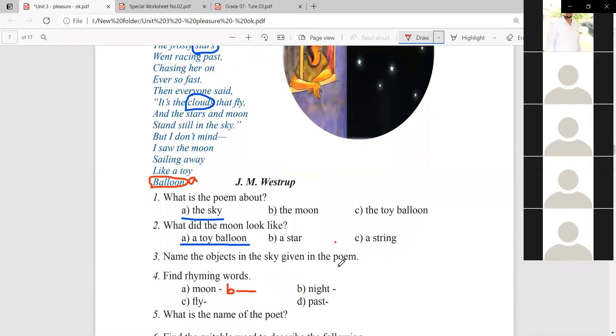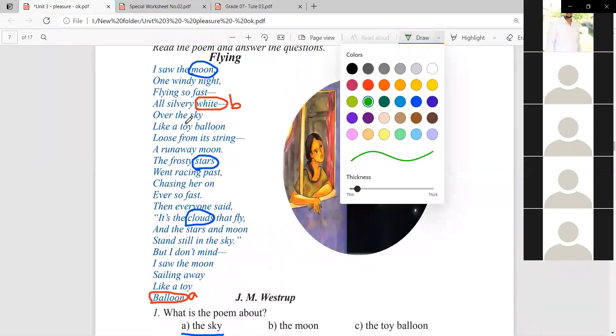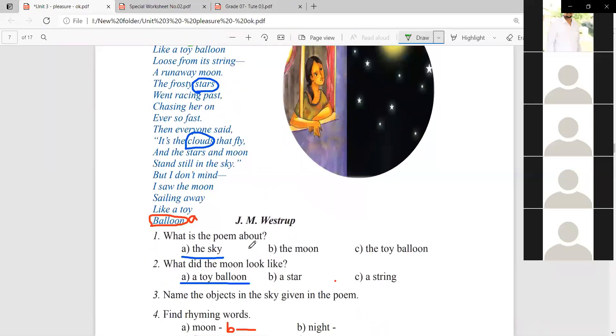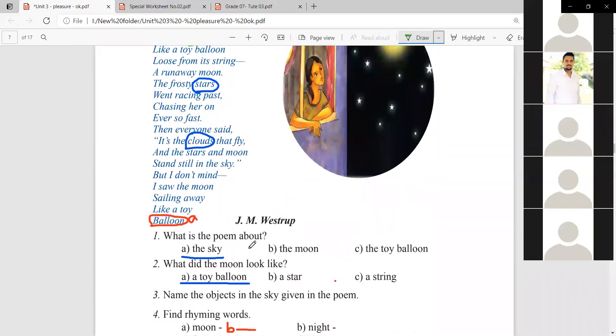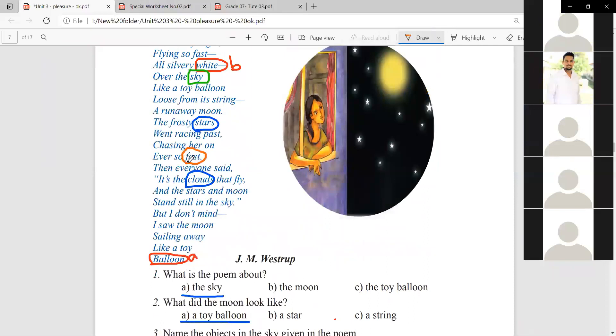What do you want to say? Fly. Fly. Sky. Fly and sky rhyme together. Fast is another one. Fast rhymes with past. That's correct.